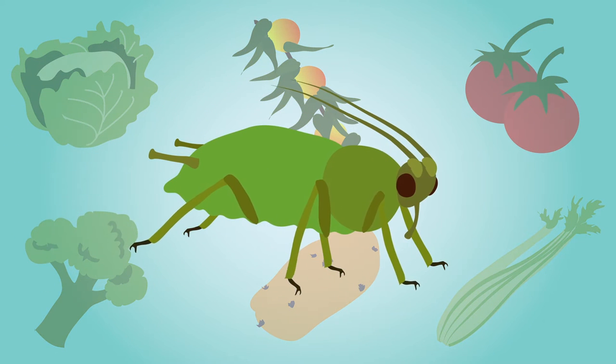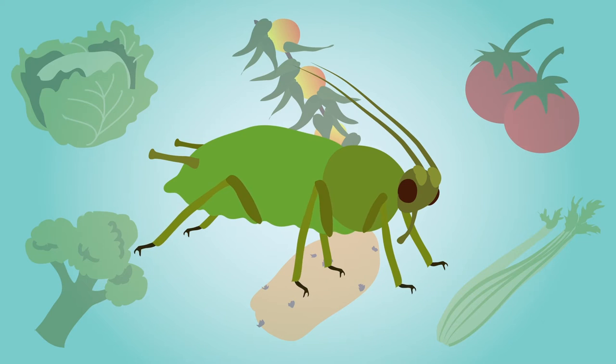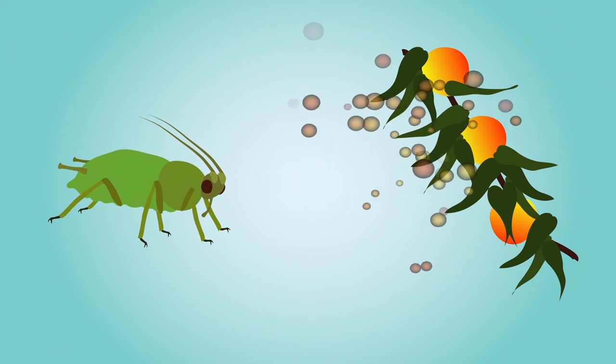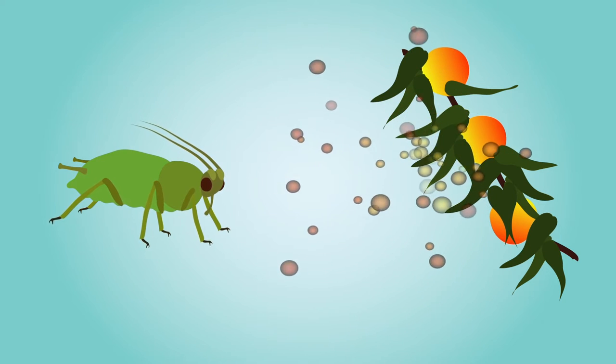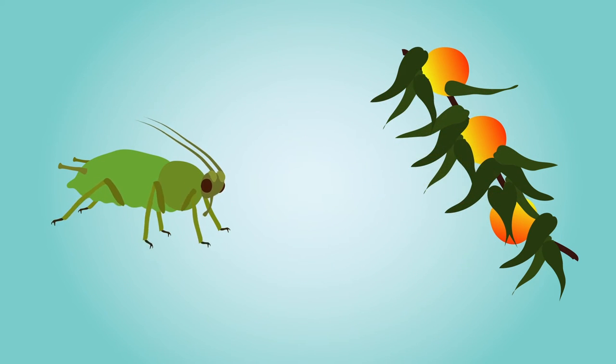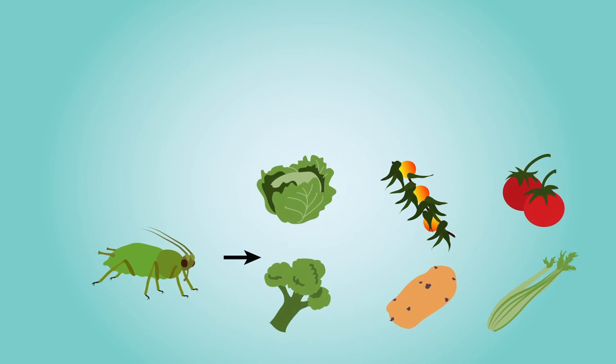Clearly, the bugs aren't picky, but this generalist approach is actually quite rare. Because plants evolve defenses to protect against pests, insects usually need to respond in kind, evolving ways to get around them. This co-evolutionary arms race means most bugs call only a small number of related plants home.